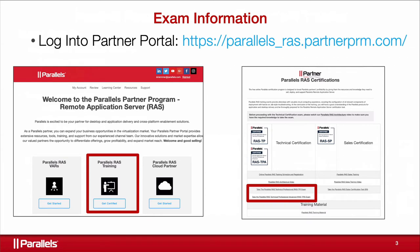For partners, you can log into the Parallels partner portal to access training and sign up for the certification exam. There's a basic exam and also an advanced course and exam. The portal URL is https://parallels_RAS.partner-prm.com. There will be links in the follow-up emails. You can also access all training materials there, including recordings, the slide deck, and other resources.